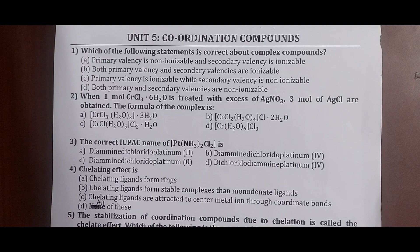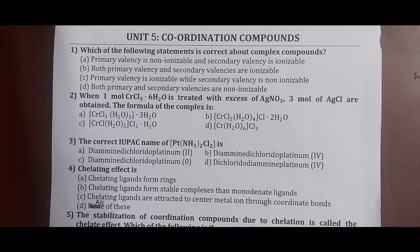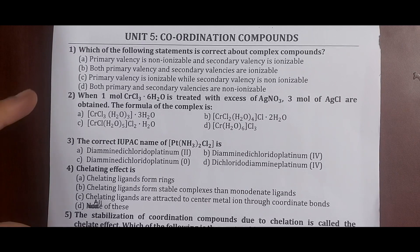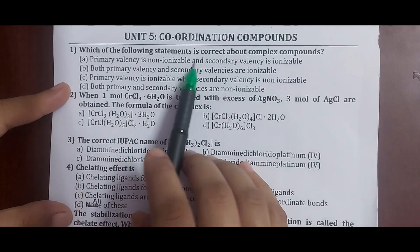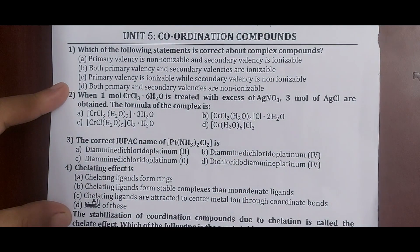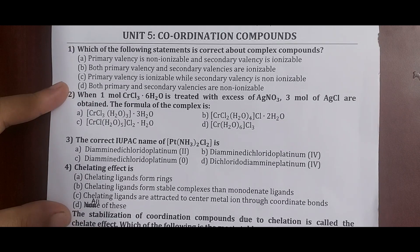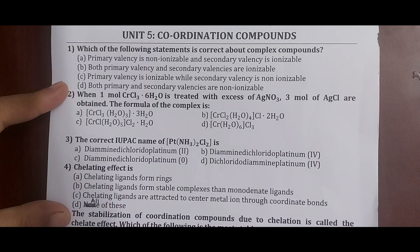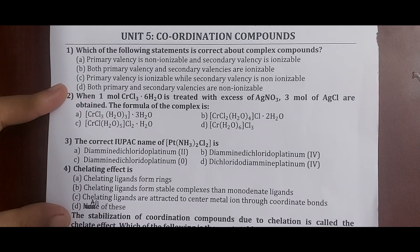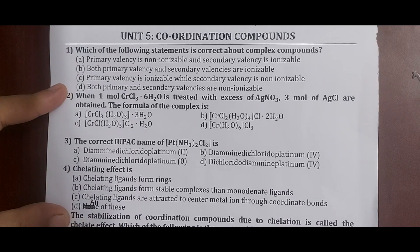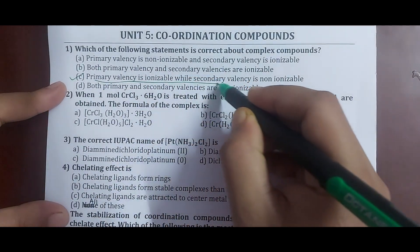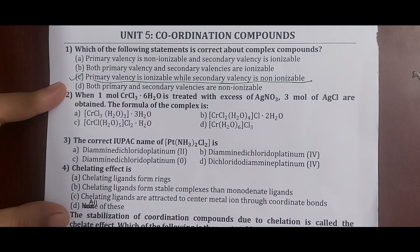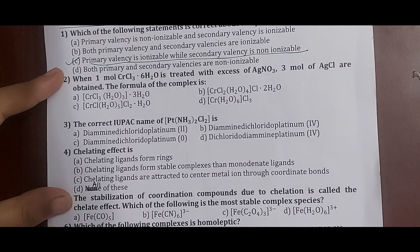We'll go with questions on coordination compounds. Question 1: which of the following statements is correct about coordination compounds? Options: (a) primary valency is non-ionizable and secondary valency is ionizable; (b) both are ionizable; (c) primary valency is ionizable while secondary valency is non-ionizable; (d) both are non-ionizable. The correct answer is option C — these are the postulates of Werner's theory.